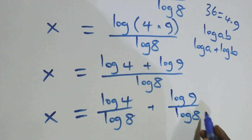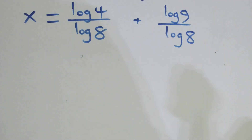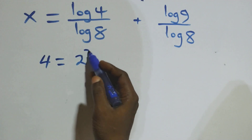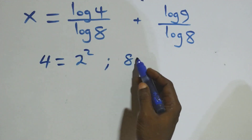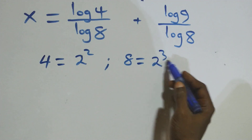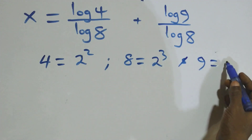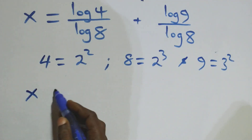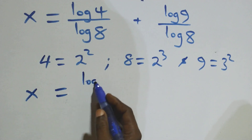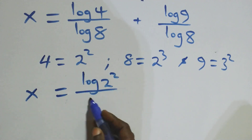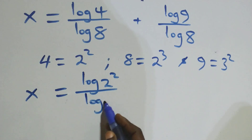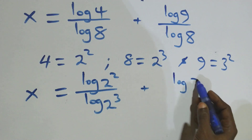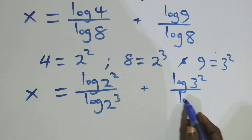Next step here, we can express 4 as 2 times 2, which is 2 squared. Also 8 as 2 times 2 times 2, which is 2 cubed. And 9 as 3 times 3, which is 3 squared. So what we have here becomes x equals to log(2 squared) over log(2 cubed) plus log(3 squared) over log(2 cubed).